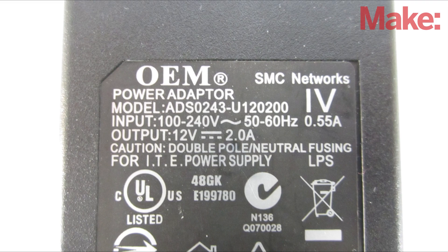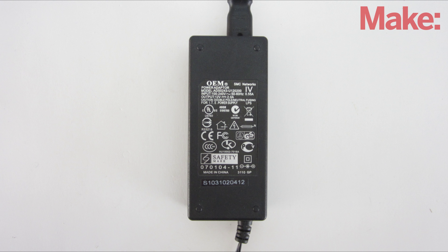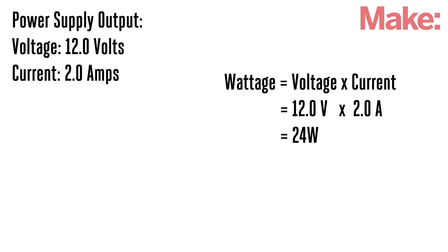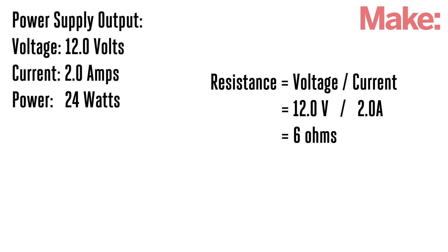Start by checking the label to see the rated output voltage and current. In this case it was 12 volts and 2 amps. This is the output that the power supply is designed to have, so we want to duplicate this. First, calculate the power rating of the power supply by multiplying the output voltage by the output current. Then find the design load resistance by dividing the output voltage by the current.